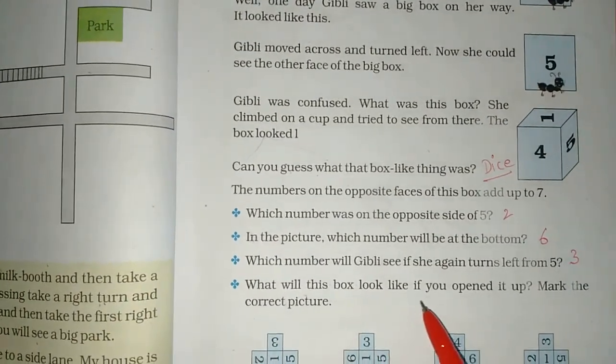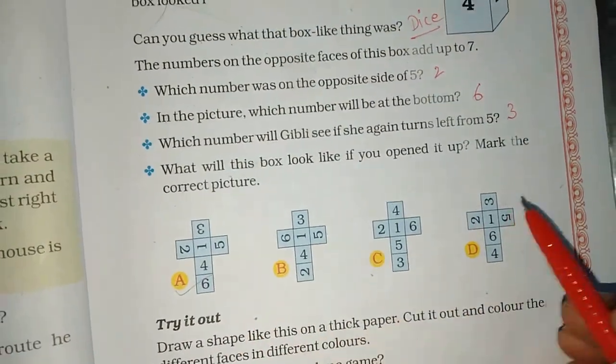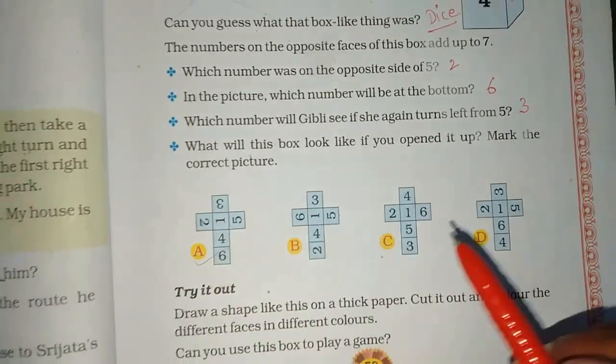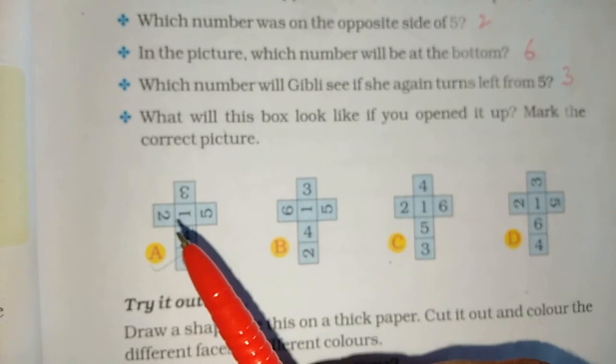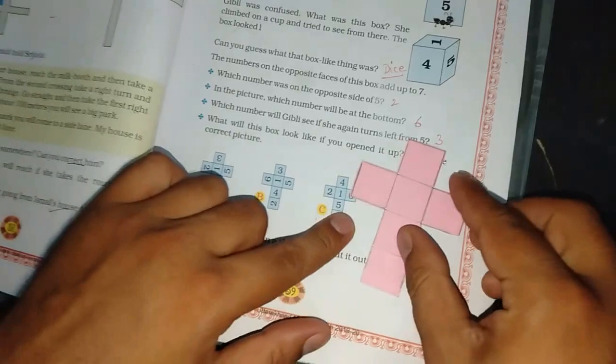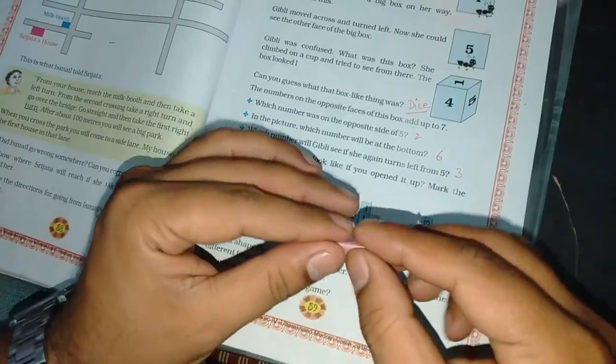What will this box look like if you opened it up? Mark the correct picture. According to this figure, which one is correct? Let me tell you which one is correct. How much should it be? Seven. We have one figure. What do we do with this figure? Dice.